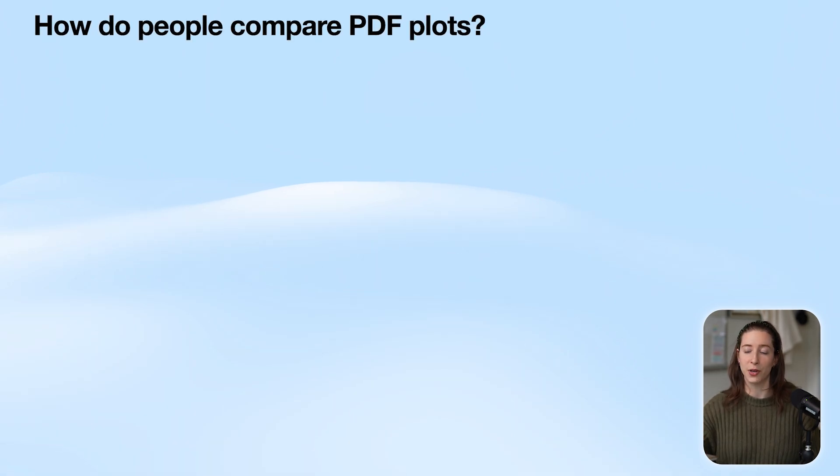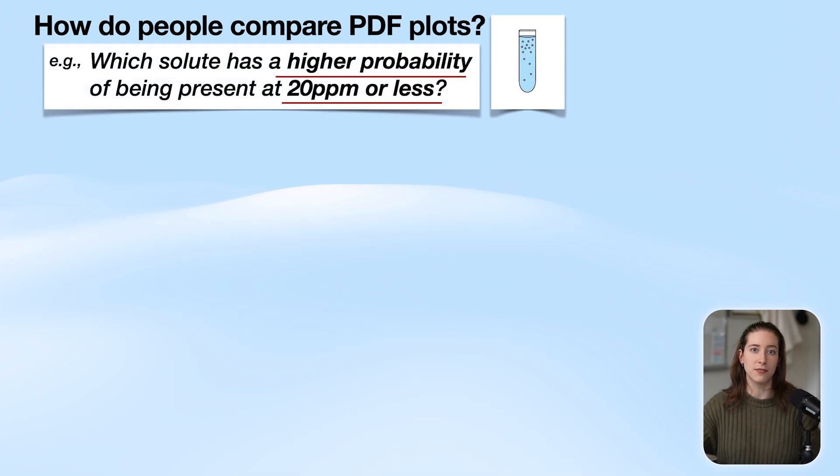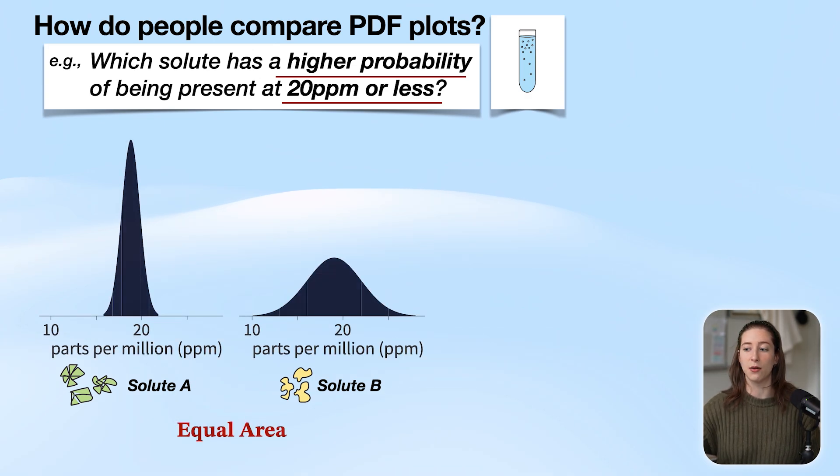Let's take a look at how people compare PDF plots. Let's take an example. Say that you're a scientist and you're evaluating seawater. So you take a sample of seawater and you're looking for the presence of solutes, things that are dissolved within that seawater. And there's two solutes that exist: solute A and solute B. And you want to know which has a higher probability of being present in the seawater at 20 parts per million or less.